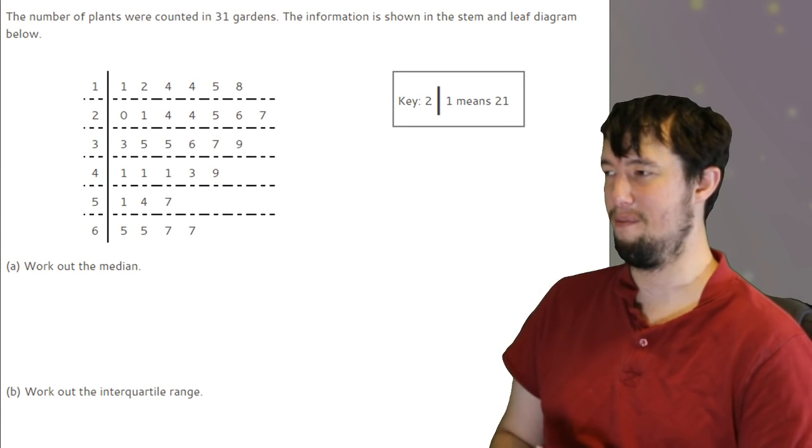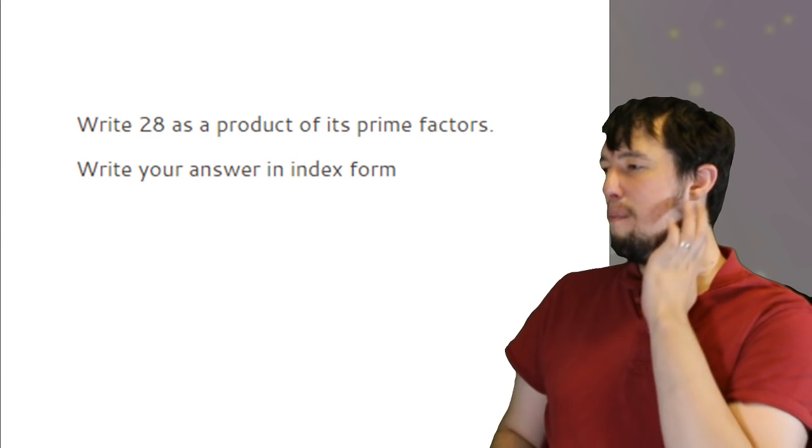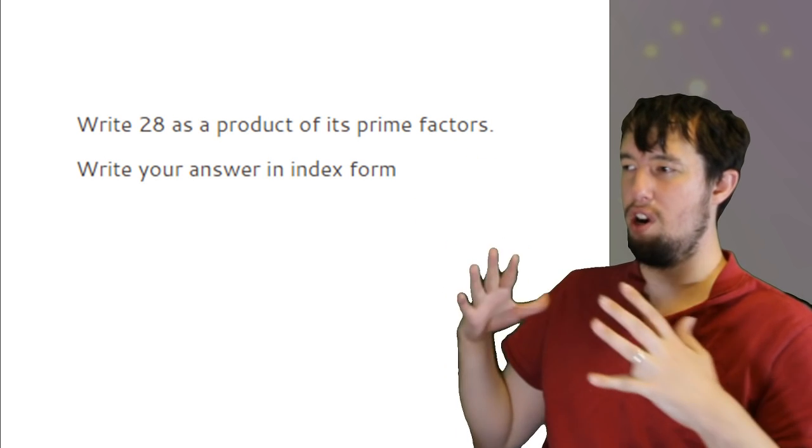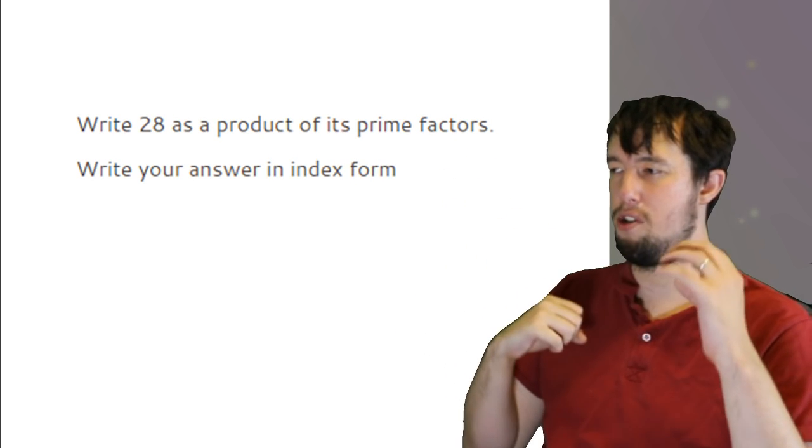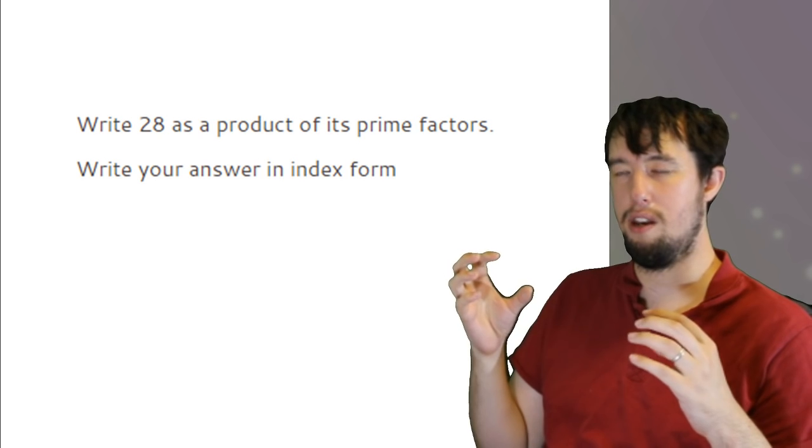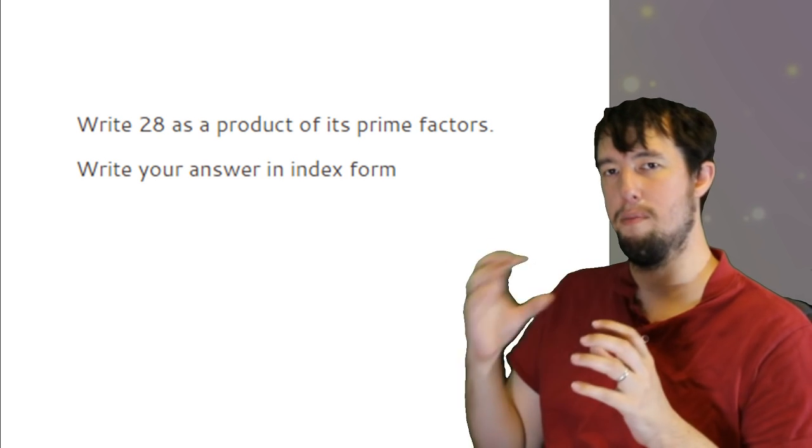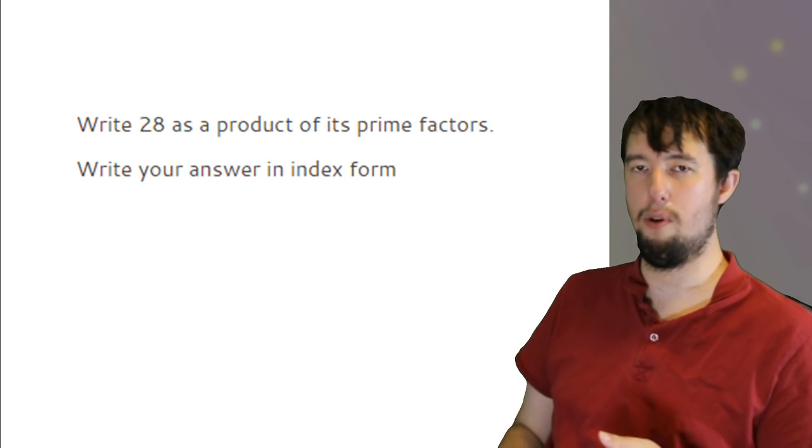Product of prime factors, just do your tree. So 28, and then split it up into 2 times 14. Split the 14 up into 2 times 7, and then there's your prime numbers.